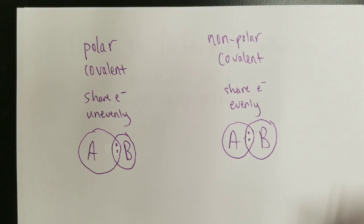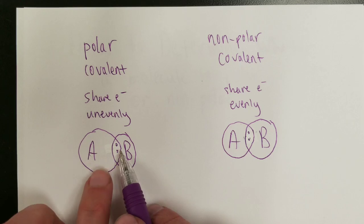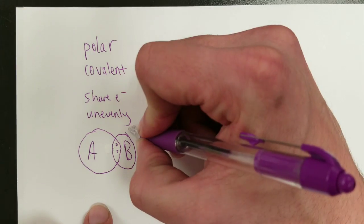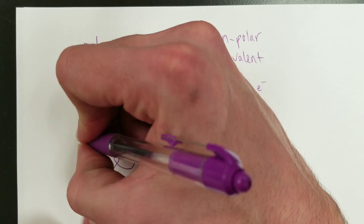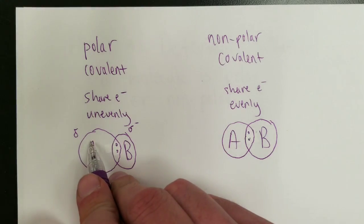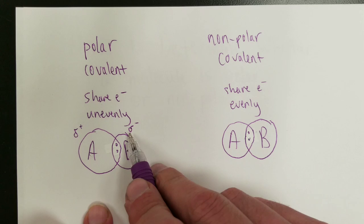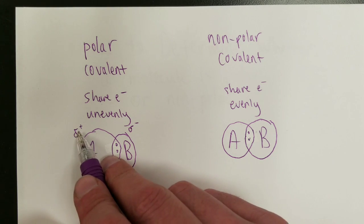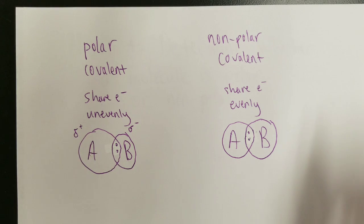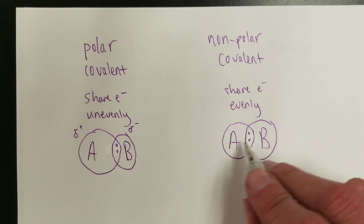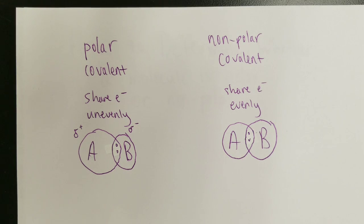So this polar covalent thing means that one of the atoms, being that it has these negative electrons closer to itself, is going to have a partial negative charge. This one, having had the electrons pulled away, partial positive charge. Whereas neither of these would have any partial charge, they're equally sharing the electrons.